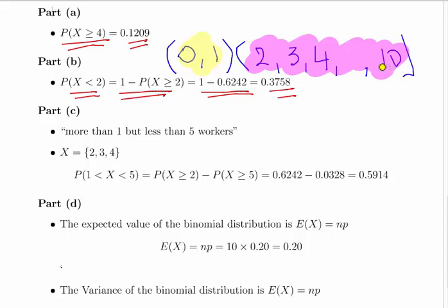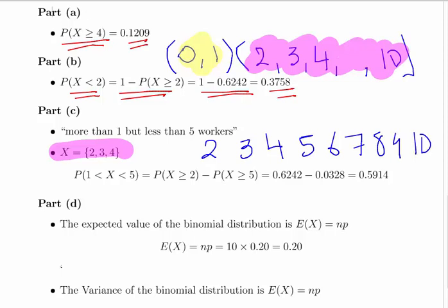Now, more than 1 and less than 5 corresponds to the sample points 2, 3, and 4. So if we look for the probability of X greater than or equal to 2, we get 0.6242. But we only want 2, 3, and 4. We don't want 5, 6, 7, 8, 9, or 10.